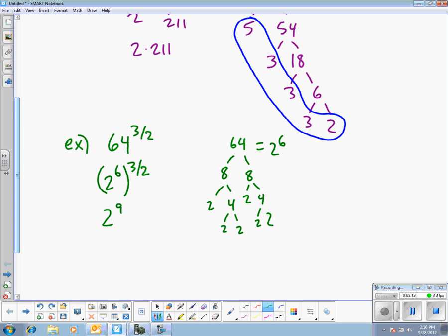I already know from my other work over here on the side that 2 to the 6th is 64. So I basically need to double that three more times. 2 to the 6th is 64. Then 2 to the 7th would be 128. 2 to the 8th would be 256. And 2 to the 9th would be 512. So a little bit of work involved. But without a calculator, I've found that 64 to the 3 halves is 512.